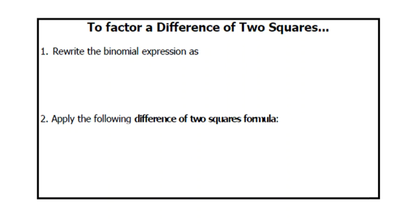If you have a binomial that can be written as A squared minus B squared, then you have what's called a difference of two squares. A difference because you're subtracting the two terms, and squares because each term can be written as a power of two.